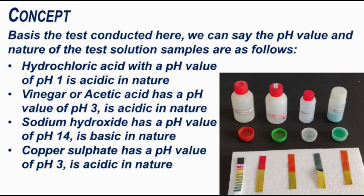Vinegar or acetic acid has a pH value of 3, which is slightly weaker than HCl. Sodium hydroxide has a pH value of 14 — observe the dark green color — that is a strong base. Copper sulfate has a pH value of 3, which is also acidic in nature. In this activity, HCl is a strong acid and sodium hydroxide is a strong base, depending on their pH values.